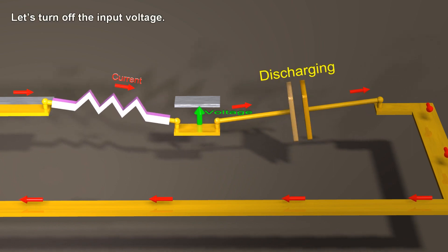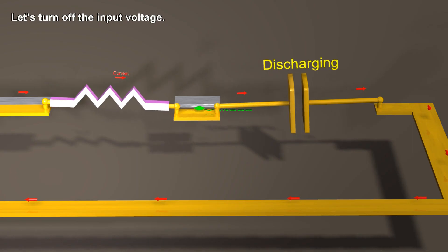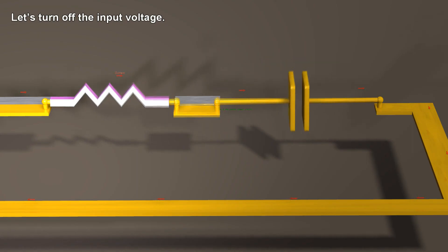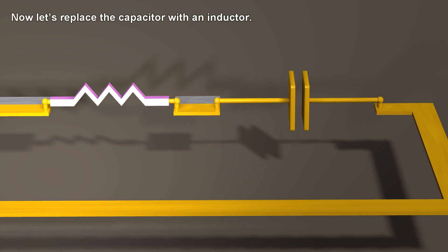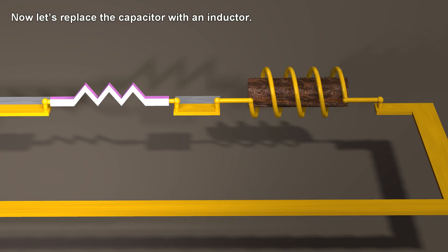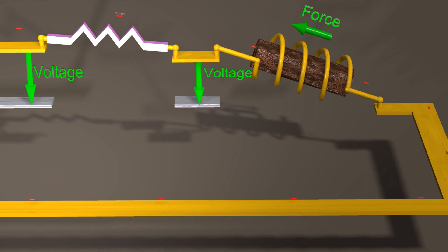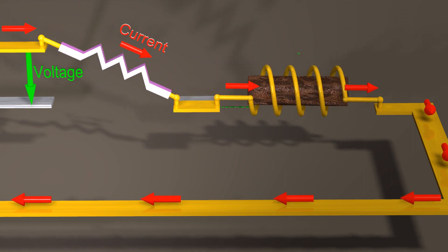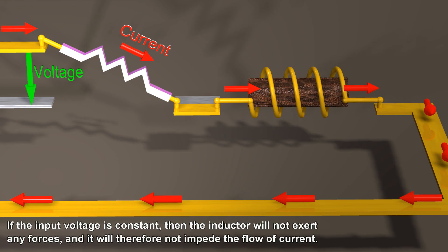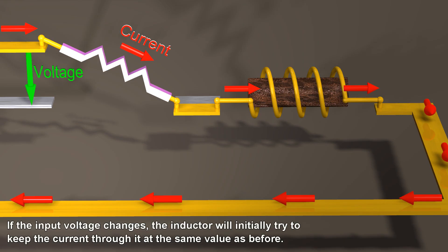Let's turn off the input voltage. Now let's replace the capacitor with an inductor. An inductor exerts a force preventing the current flowing through it from changing instantaneously. If the input voltage is constant, then the inductor will not exert any forces, and it will therefore not impede the flow of current. If the input voltage changes, the inductor will initially try to keep the current through it at the same value as before.